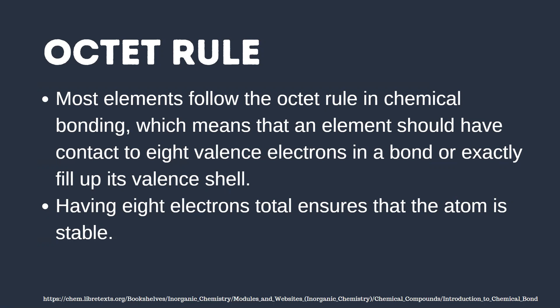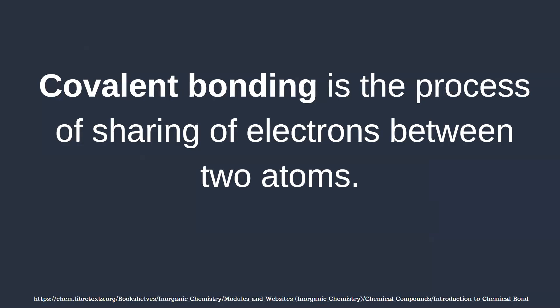When atoms combine to form compounds, they can give up, accept, or share electrons in order to assemble an octet of electrons in their outer shell. A covalent bond is formed when atoms share electrons. Covalent bonding is the process of sharing of electrons between two atoms.